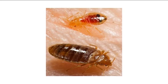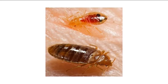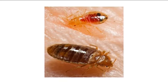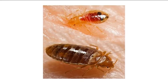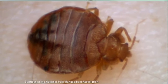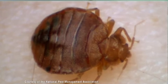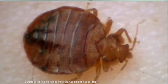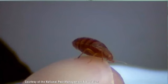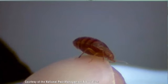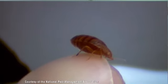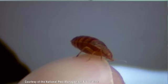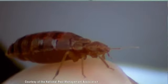Newly hatched nymphs are translucent, lighter in colour and become browner as they molt and reach maturity. A bed bug of any age that has just consumed a blood meal has a bright red translucent abdomen, fading to brown over the next several hours and to opaque black within 2 days as the insect digests its meal.